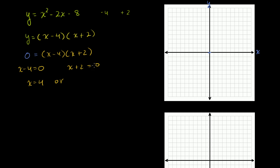Subtracting 2 from both sides, x could be equal to negative 2. So the points where we intersect — when x is 4, this term is 0, so the whole thing is 0, y is 0. So the points 4 comma 0 and negative 2 comma 0 are both on this parabola.